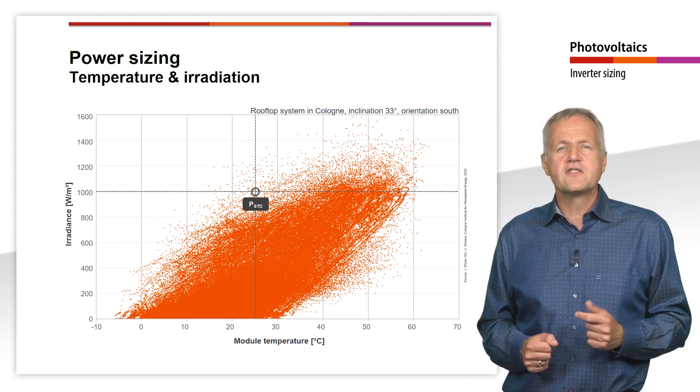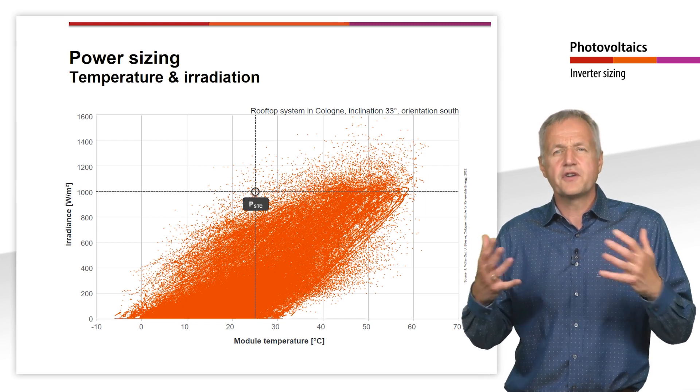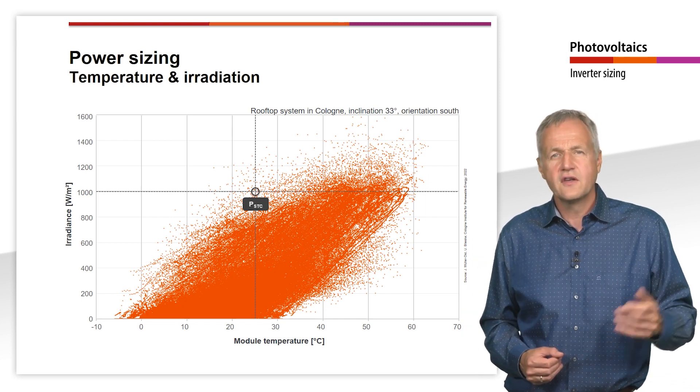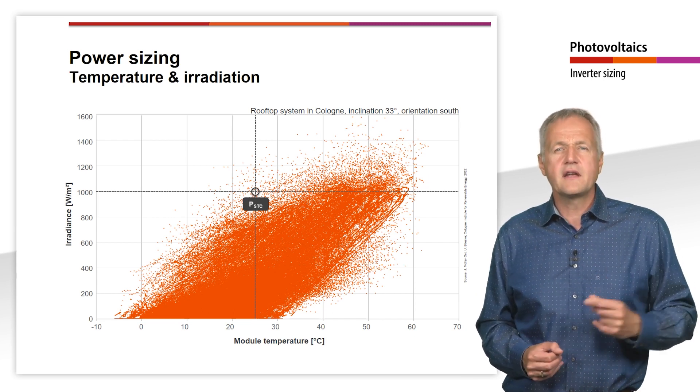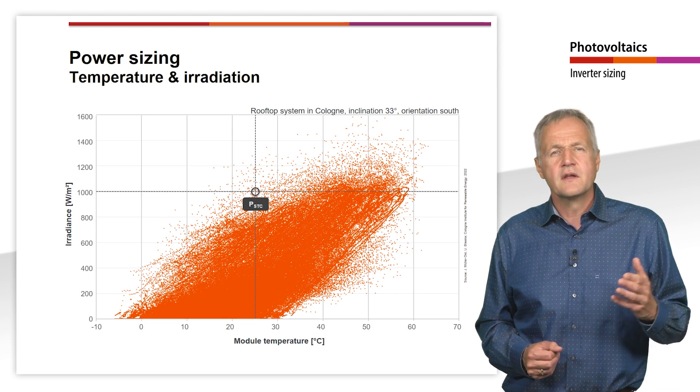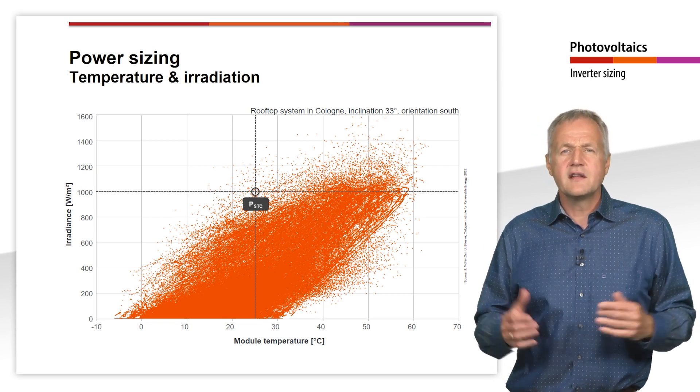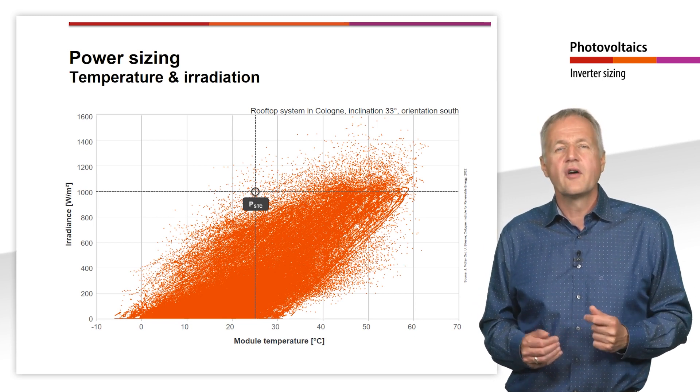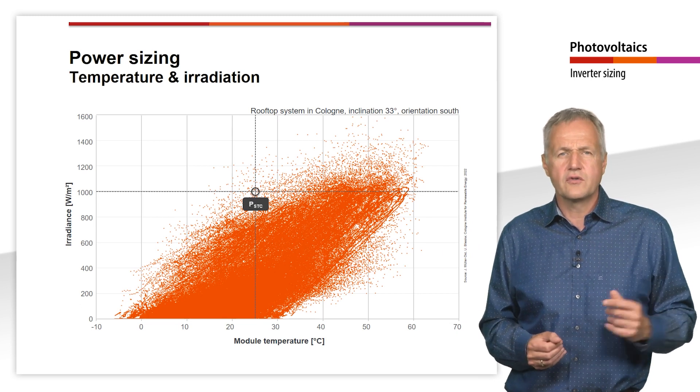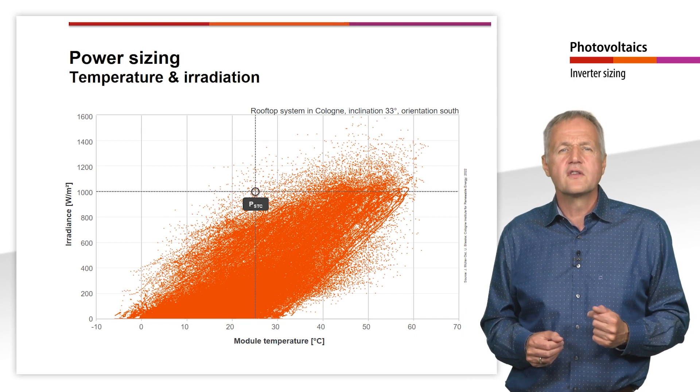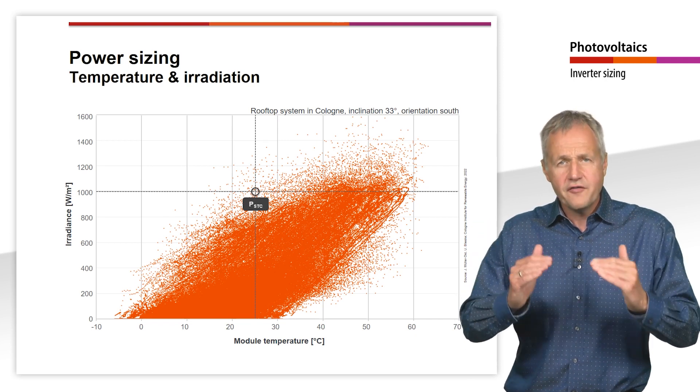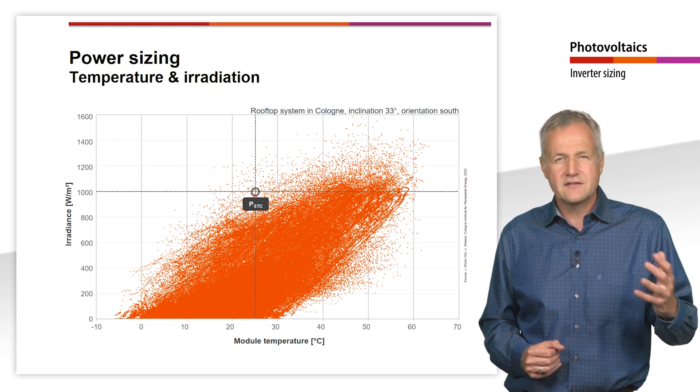Since the solar modules heat up by 20 to 45 degrees Celsius at such high irradiance depending on the installation situation. This can be seen clearly in the diagram shown here for a rooftop installation in Cologne. Due to the heating of the solar modules, their performance drops significantly compared to STC conditions.